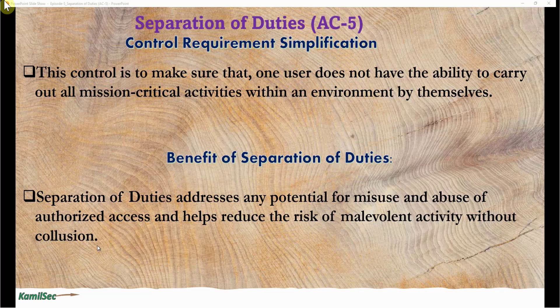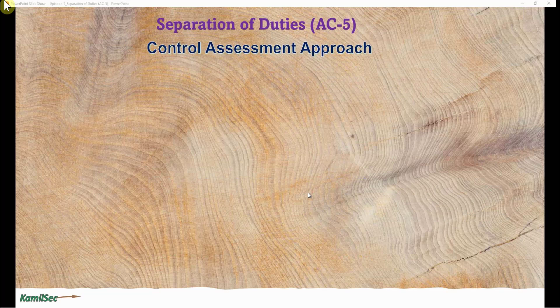However, this control does not address coalition. If someone in charge of accounts payable colludes with the person in charge of payment authorization and they defraud the company, that is possible — this control may not catch that, because it is actually two people acting together. You have to be able to collude with somebody in order to circumvent this control.